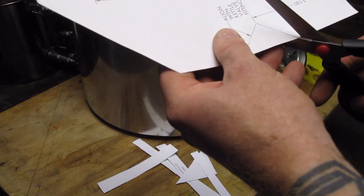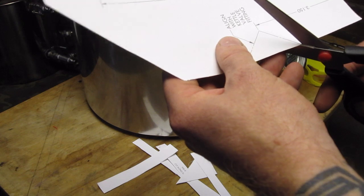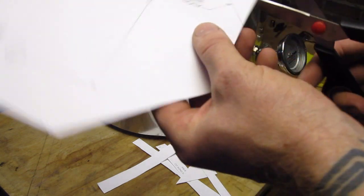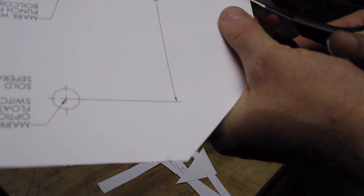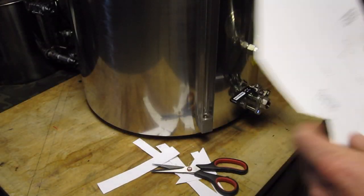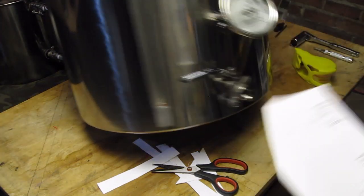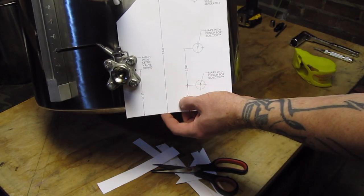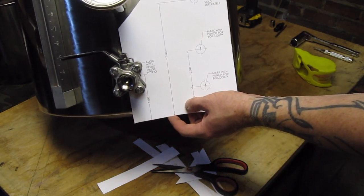Just make sure you get the bottom really flat in this spot here. Get that cut out. This is going to sit inside of your kettle like this. So I'm going to tape that on.